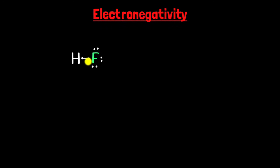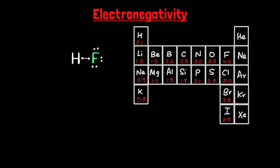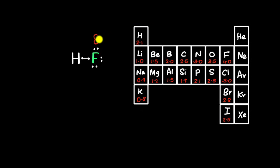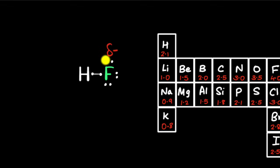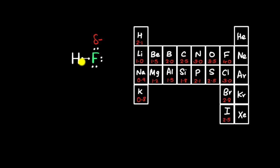That depends upon something called electronegativity — the tendency of a bonded atom to pull the shared pair of electrons towards itself. Here's an electronegativity chart: hydrogen has an electronegativity of 2.1 whereas fluorine's is much higher, so fluorine pulls the shared electrons more towards itself. As a result, fluorine ends up with a partial negative charge (δ−) and hydrogen ends up with a partial positive charge.